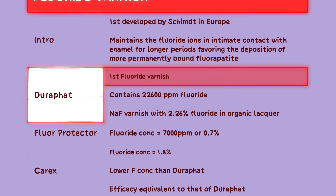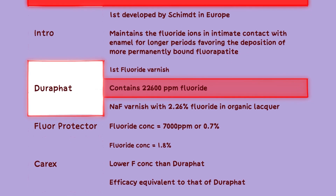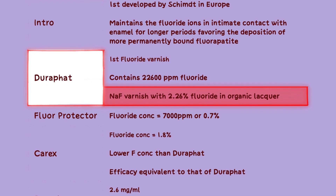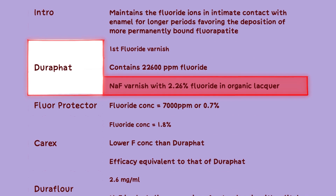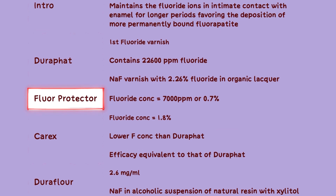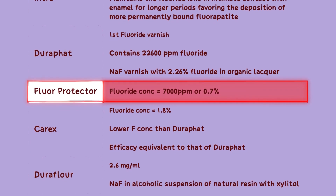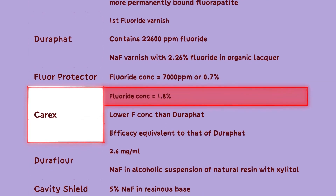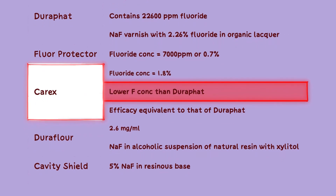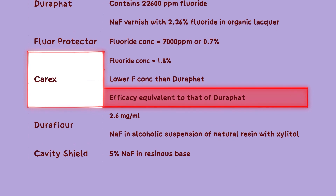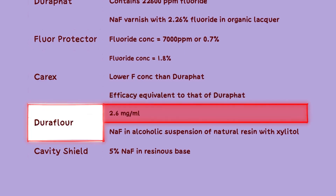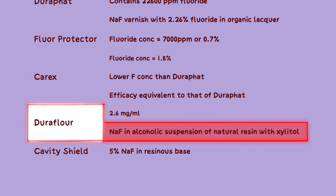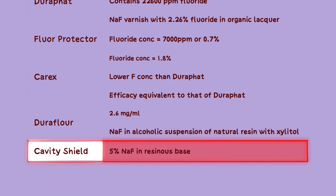Duraphat was the first fluoride varnish developed and contains 22,600 parts per million fluoride. It is a sodium fluoride varnish with 2.26% fluoride in an organic liqueur base. Fluor Protector has a fluoride concentration of 7,000 parts per million (0.7%) and is effective for caries prevention. Carex has a fluoride concentration of 1.8% — lower than Duraphat but with equal efficiency. Duraflow varnish contains 2.6 mg per milliliter of fluoride in an alcoholic suspension of natural resin with xylitol. Cavity Shield has a fluoride concentration of 5% sodium fluoride with a resinous base.